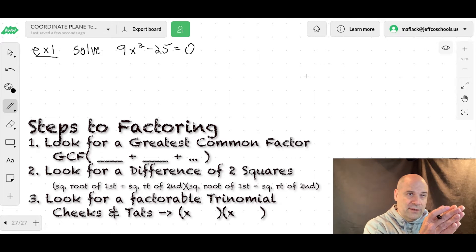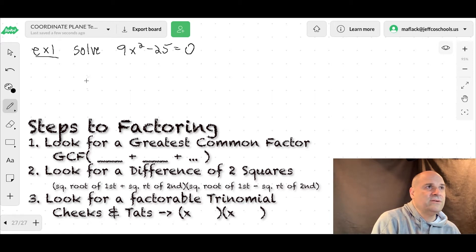Got that going for it. Two squares. Yes, 9x squared is square rootable. Square root of 9x squared is 3x, and the square root of 25 is 5. So this is a difference of two squares. So let's factor it out.